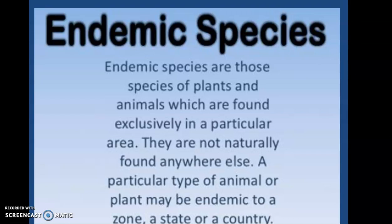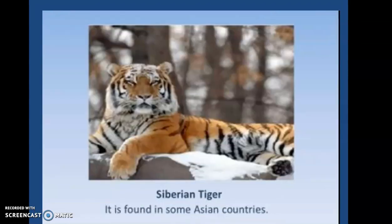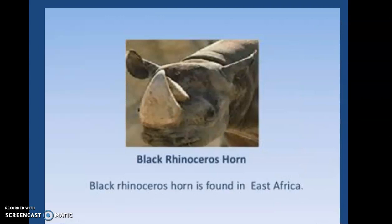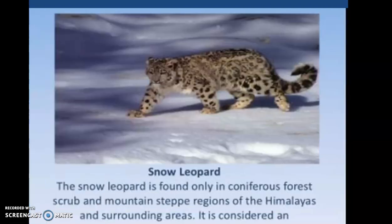A particular type of animal or plant may be endemic to a zone, a state, or a country. For example, if I talk about the Siberian tiger, it is found in some Asian countries. Now here you can see a picture of the black rhinoceros horn. Black rhinoceros horn is found in East Africa. Snow leopard is there too.